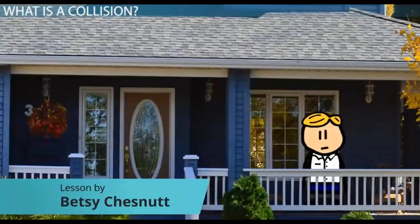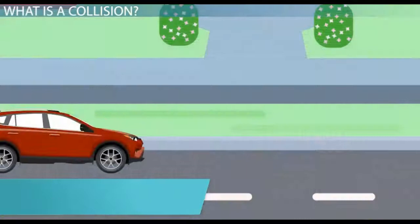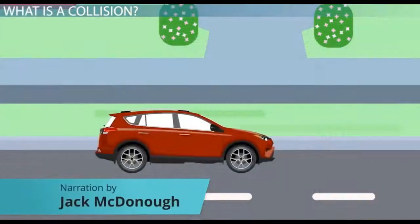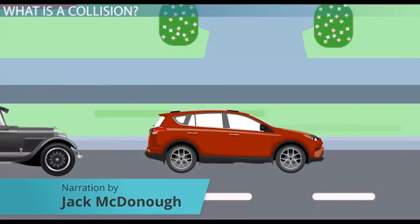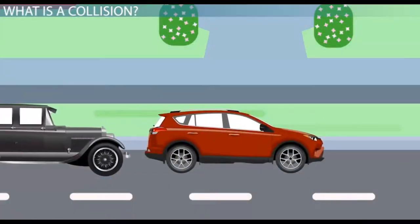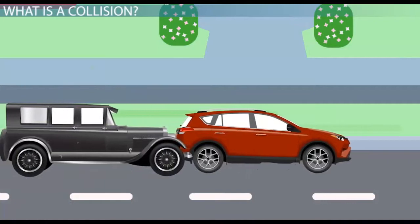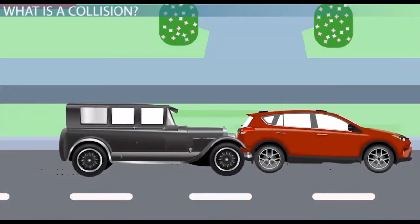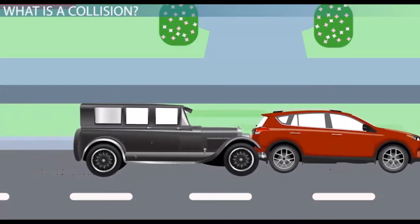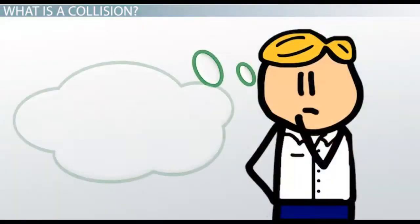While sitting on your front porch one day, you see two cars coming down the road. Suddenly, the car in front stops. The car behind doesn't notice and hits them from behind. The two cars both slide forward as one until the wreckage slowly comes to a stop. What just happened?